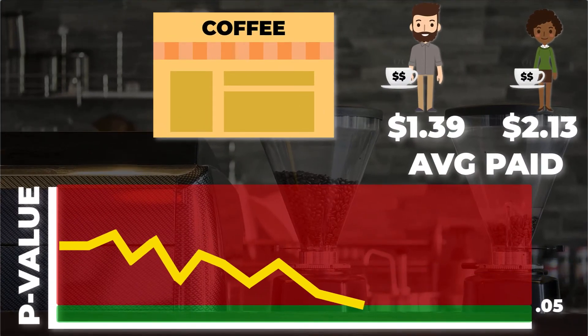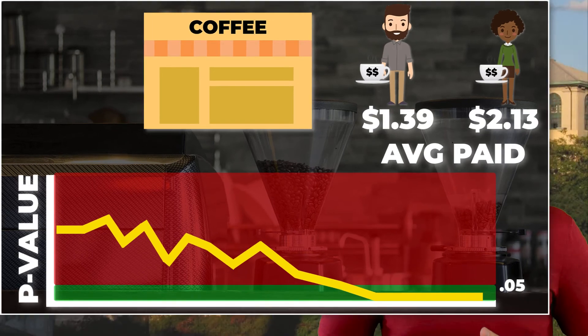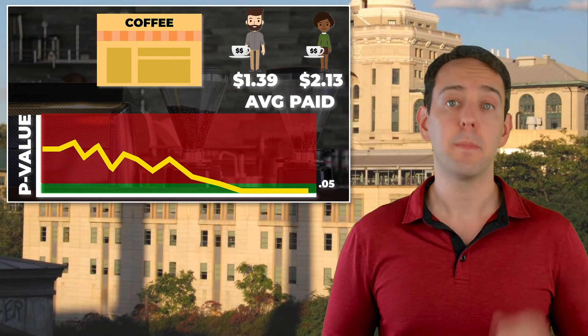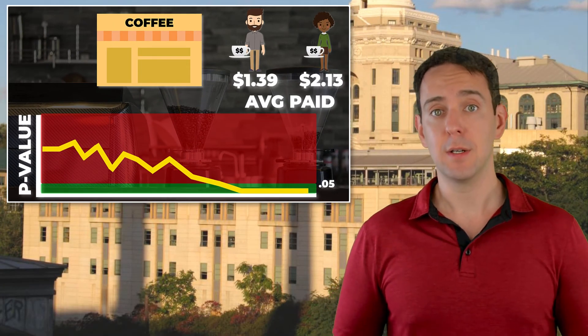Now to be clear, it is absolutely possible that with more customers we would continue to find a strong, reliable difference between how much men and women pay on average, and that p-value would have stayed well below 0.05. But because we stopped collecting data, we would never know. In other words, when you collect data, you can't just decide on the fly how many observations you'll have.